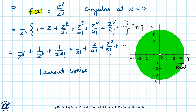For example, if we look at f(z) equals e to the power z divided by z cubed, it has a singularity at z equals zero. The Laurent series expansion of f(z) is 1 upon z cubed plus 1 upon z squared plus 1 upon 2 factorial z plus and so on. The highest negative power term is minus 3, so f(z) has a pole of order 3.